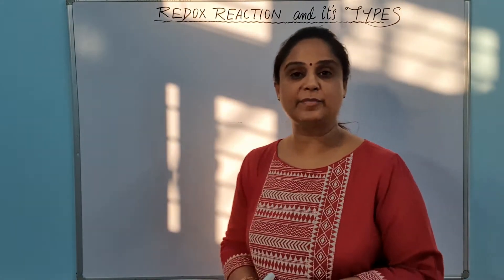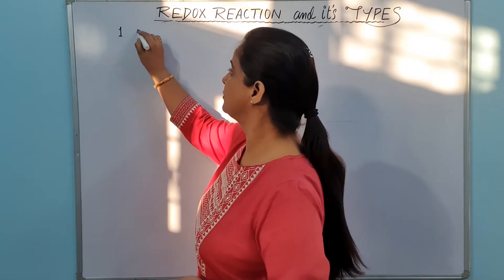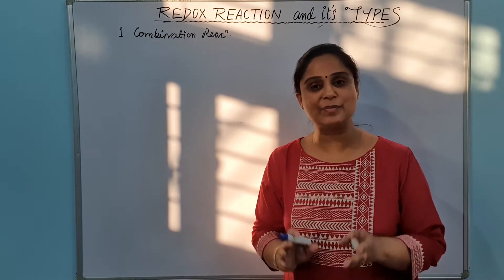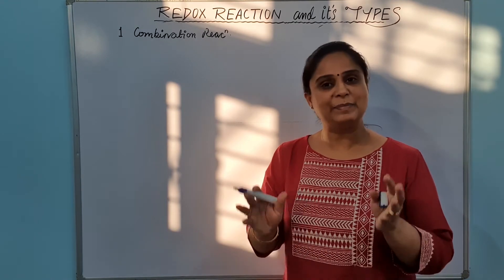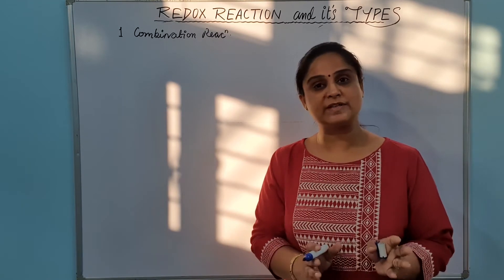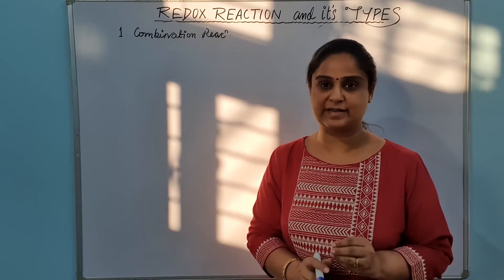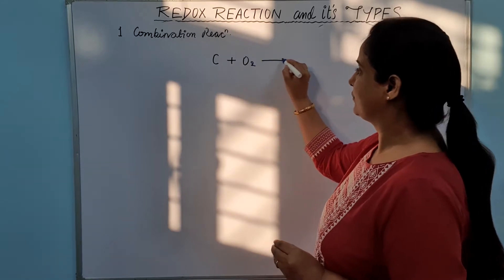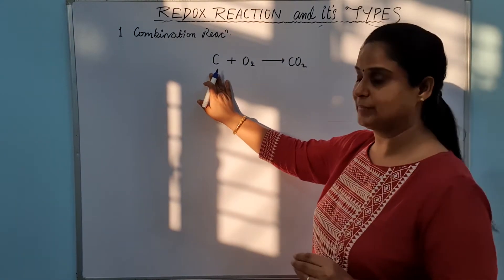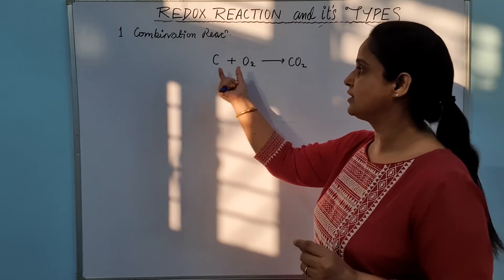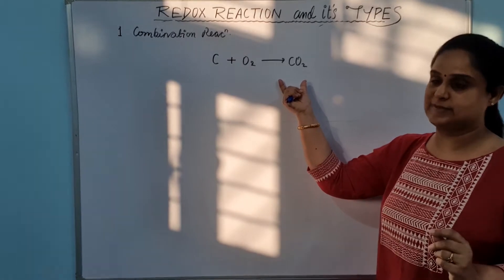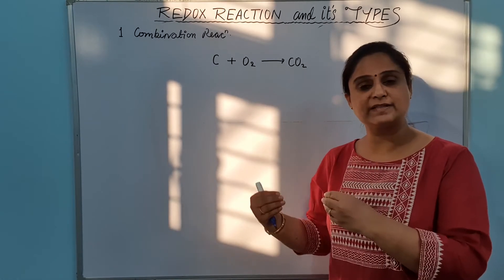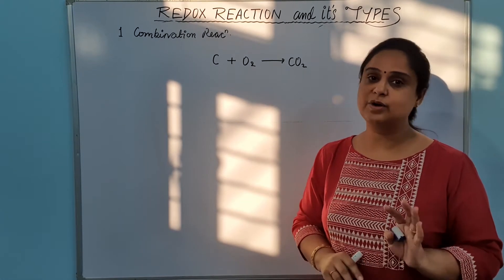Now let us see the types of redox reactions. The very first type is the combination reaction. We have learned about combination reactions in junior classes, so I won't describe it in detail, but we will describe it in terms of oxidation and reduction. For example: C + O₂ → CO₂. This is a combination reaction because two substances are combining to form a single substance.